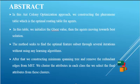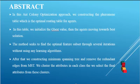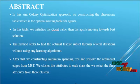The method seeks to find the optimal feature subset through several iterations without using any learning algorithms. After that, we construct a minimum spanning tree and remove the redundant edges. We then cluster the attributes in each class and select the final attributes from these clusters.